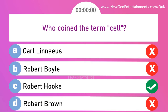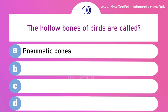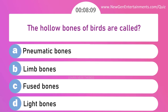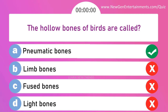The hollow bones of birds are called — options: A) Pneumatic bones, B) Limb bones, C) Fused bones, and D) Light bones. Answer is option A: Pneumatic bones.